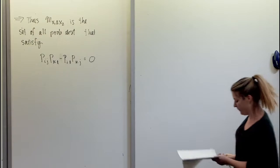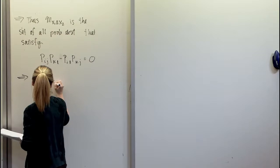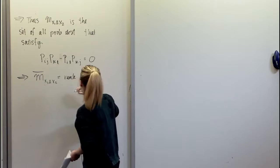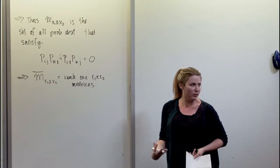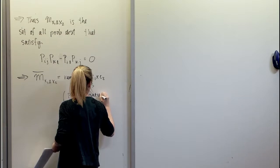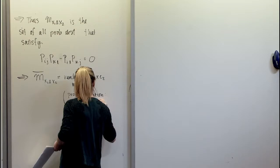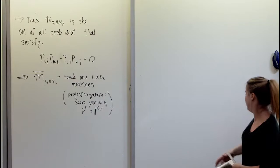This is going to be the building block of what we're working with. If we take the independence model and close it, we get the set of rank-one c_1 × c_2 matrices. If we take the projectivization, it's the Segre variety — the product P^{c_1−1} × P^{c_2−1}.